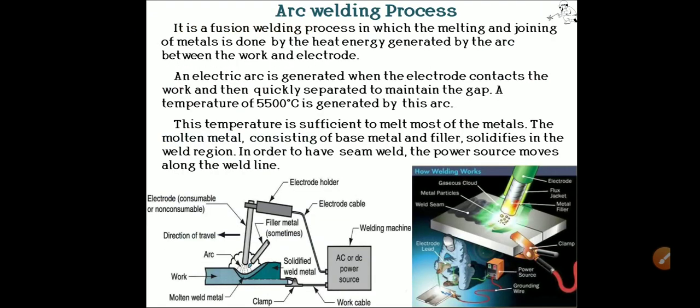Arc welding is a type of fusion welding process in which melting and joining of metal is done by the heat energy generated by the arc between the workpiece and the electrode, without applying any pressure. An electric arc is generated when the electrode contacts the work, then quickly separated to maintain a gap between the workpiece and the electrode. The temperature generated by this arc is approximately 5500 degrees Celsius, which is sufficient to melt most metals. The molten metal, consisting of the base metal and filler, solidifies in the weld region as the heat source moves along the weld line.